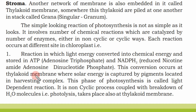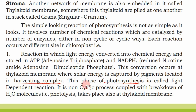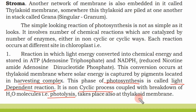Light energy is captured and stored in ATP (adenosine triphosphate) and NADPH2 (reduced nicotinamide adenine dinucleotide phosphate). This conversion occurs at the thylakoid membrane, where solar energy is captured by pigments located in the harvesting complex. This phase of photosynthesis is called the light-dependent reaction, a non-cyclic process coupled with the breakdown of H2O molecules — that is, photolysis — which also takes place at the thylakoid membrane.